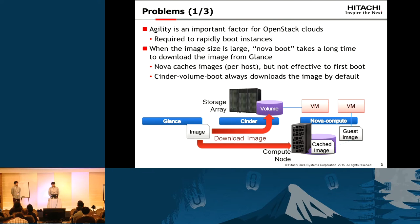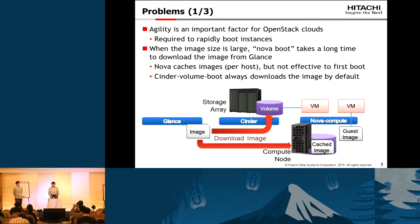Let me explain about the more detailed problems between Cinder and Glance before the Liberty phase. Agility is an important factor for OpenStack clouds, so booting an instance rapidly is required. This figure shows the basic mechanism of booting from image and booting from volume using Glance. When the image size is large, Nova boot takes a long time to download the image from Glance to the Cinder backend volume. Nova caches images but it's not effective at the first boot. Also, using Cinder volume always downloads the image by default, so it takes much time every time to boot using volume boot.